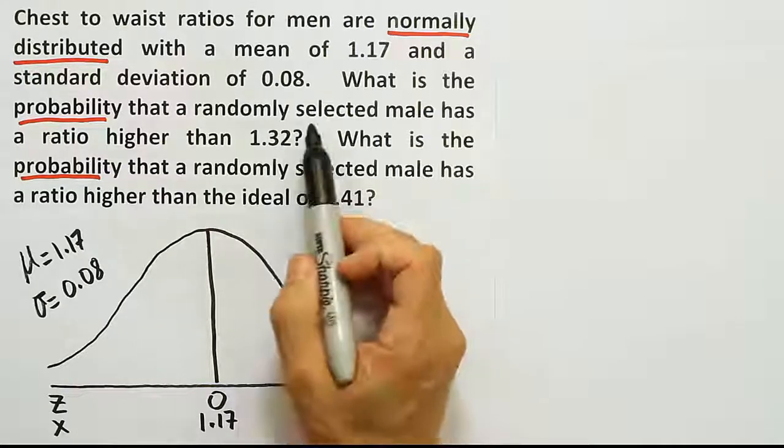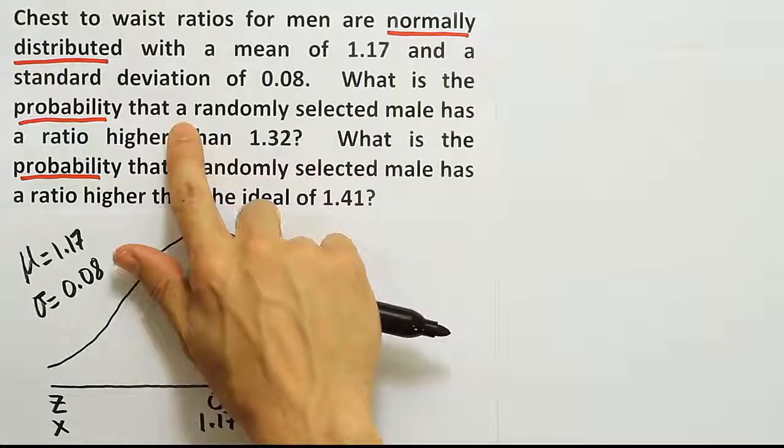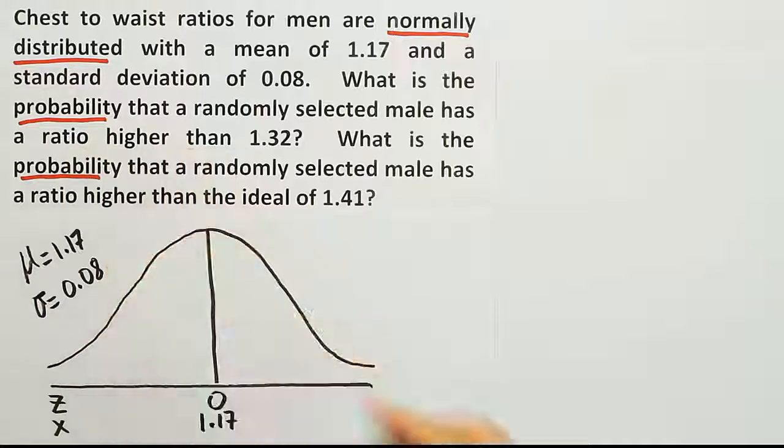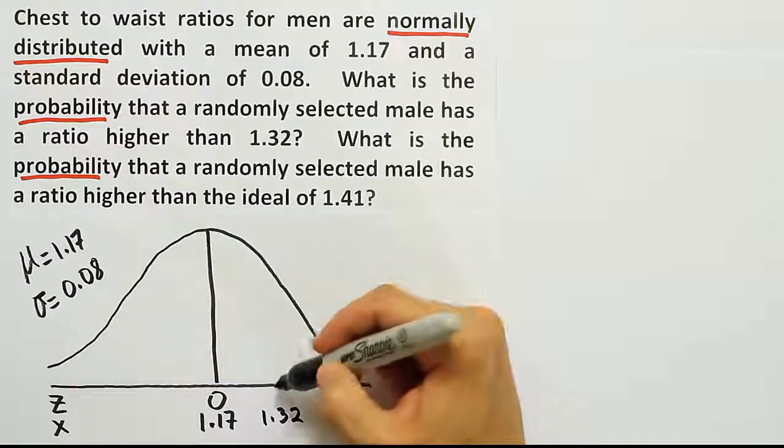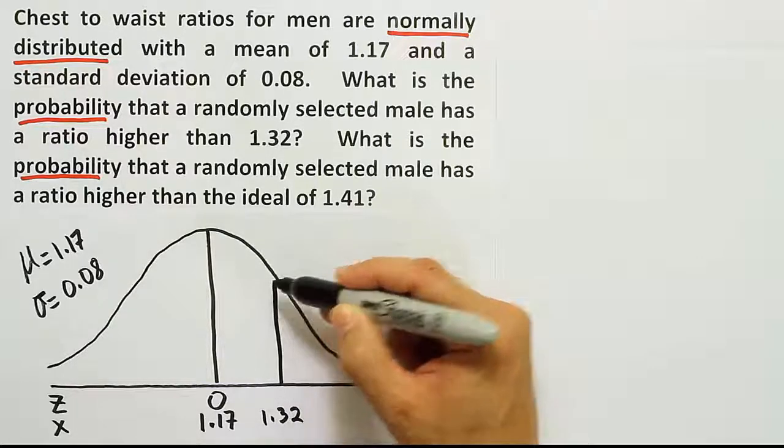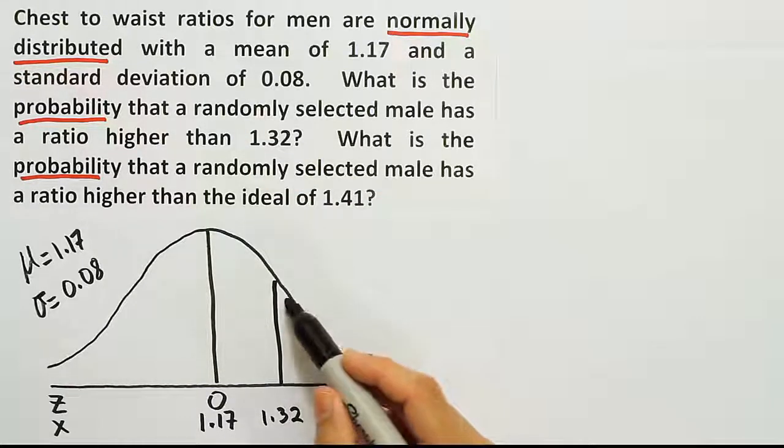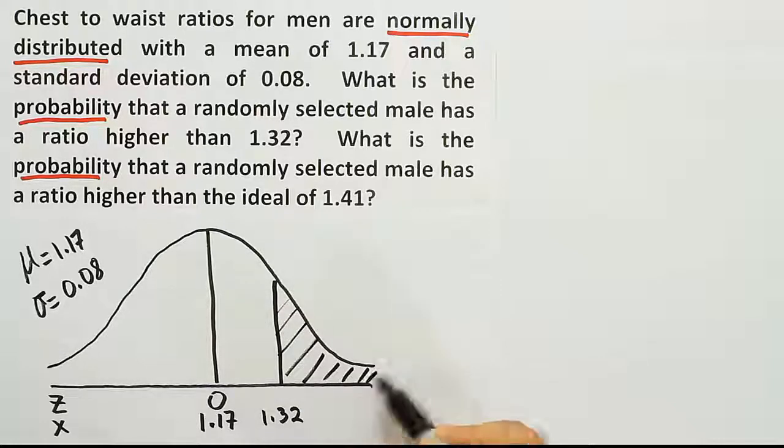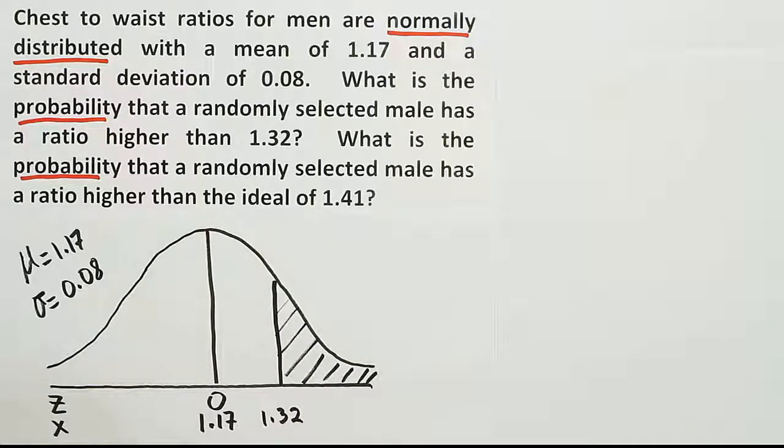Alright, now the first problem asks what's the probability that a randomly selected male, notice just one male, has a ratio higher than 1.32? Well, 1.32 is to the right of 1.17, so I'm going to draw that here. This is higher than 1.32. That's going to be higher than this number here, so we shade to the right.